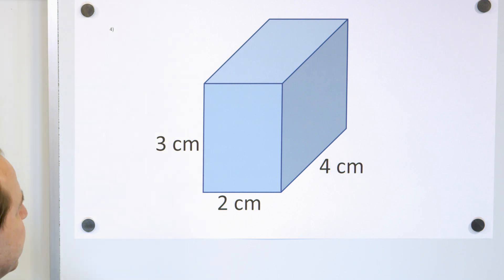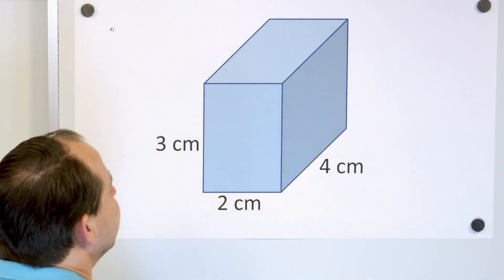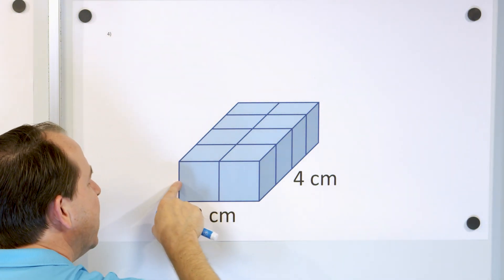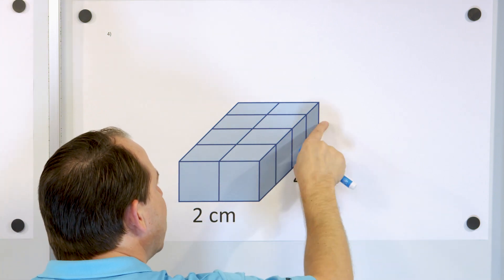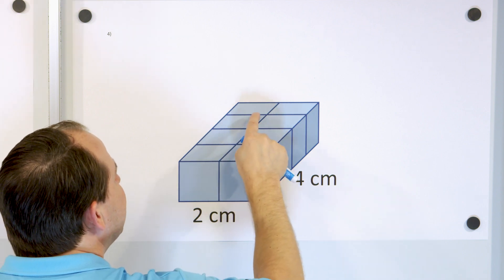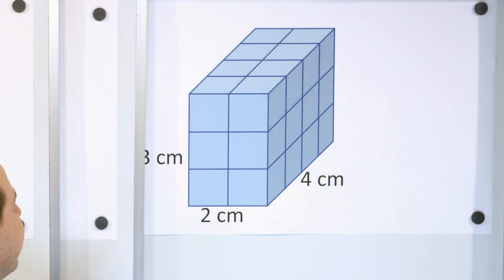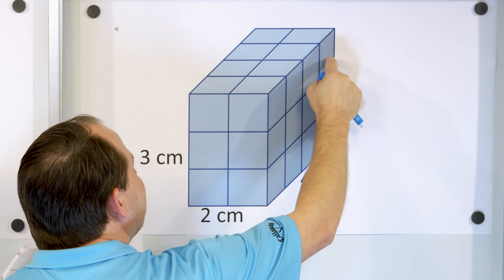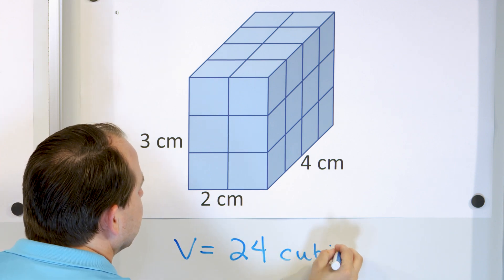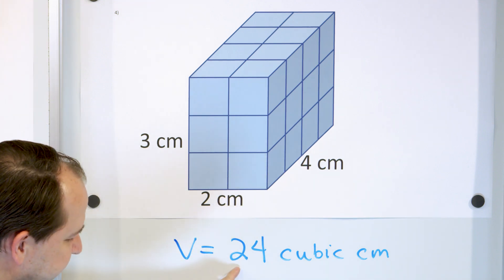Here's our last problem: a rectangular solid two centimeters wide, three centimeters tall, and four centimeters deep into the board. Looking only at the bottom layer — two wide and four deep — we have eight cubes: one, two, three, four, five, six, seven, eight. So just on the bottom layer there are eight cubes. Notice two times four is eight. Then we have eight in the next layer, and eight in the top — eight times three is 24. So the volume is 24 cubic centimeters. By multiplication: two times four is eight, eight times three is 24 cubic centimeters.